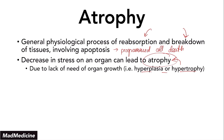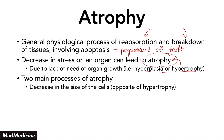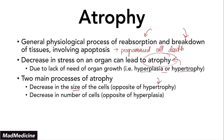There are two main processes within atrophy that you should be aware of. The two main processes are: decreasing the size of the cells, which is essentially the opposite of hypertrophy, and decreasing the number of cells, which is the opposite of hyperplasia. Atrophy undergoes both processes in order to maintain homeostasis — to reduce both the size and the number of cells of an organ.